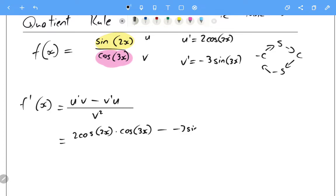All over the bottom squared which is cos of 3x squared.